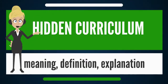A hidden curriculum is a side effect of an education — lessons which are learned but not openly intended, such as the transmission of norms, values, and beliefs conveyed in the classroom and the social environment. Any learning experience may teach unintended lessons.